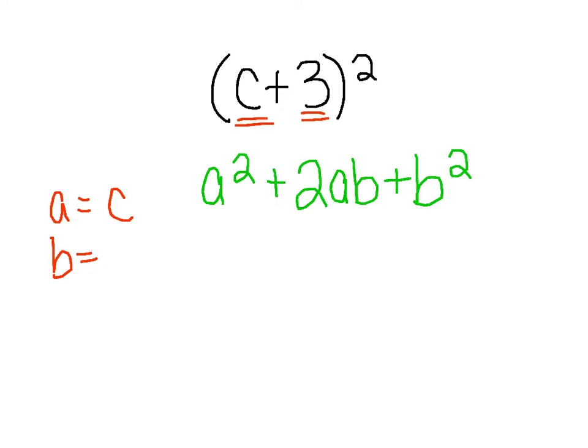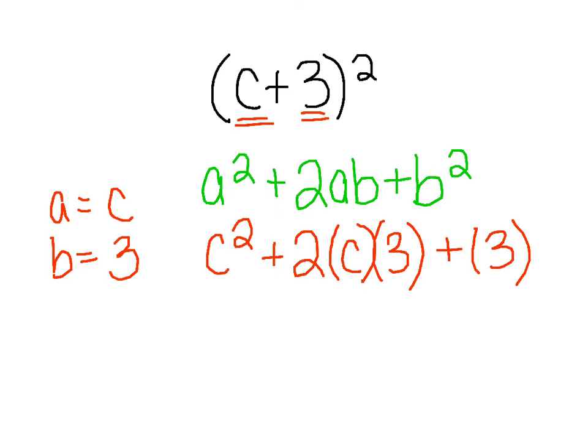I recommend that you write out what is your a, what's your b. My a is that first term, so it's going to be c. My b is the second term and it's going to be 3. Remember, we're not taking into account the sign, just the variable or the number. So let's plug it in. a squared, that's going to be c squared, plus 2. My a is c, my b is 3, so 2 times c times 3, plus my b is 3, so 3 squared.